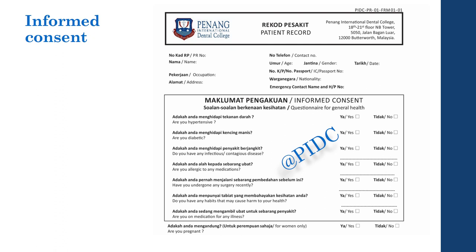The next consent question asks if the patient has any habits that may cause harm to their health, clearly referring to deleterious habits like smoking and alcohol. Tobacco use is associated with oral cancer and heavy staining of teeth. It is important to gather details about the type of product used, the frequency of use, and the duration — for example, how long the patient has been smoking or using a tobacco substance.